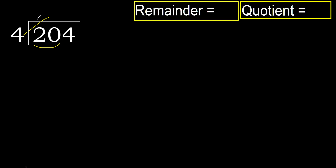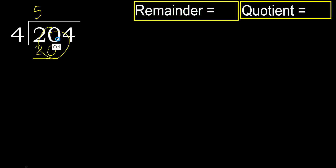4 multiplied by 6 is greater. Multiply by 5 is 20, is not greater. Subtract — 0. Next.